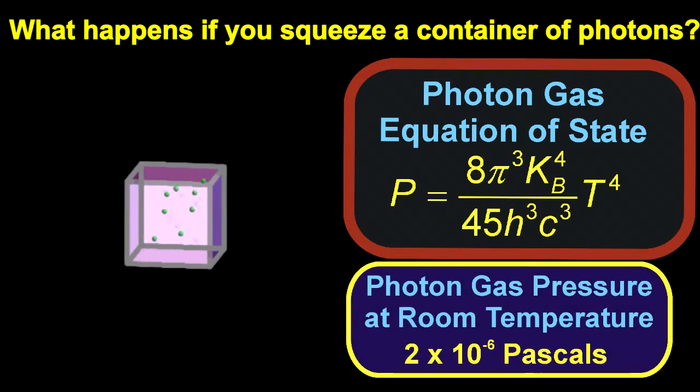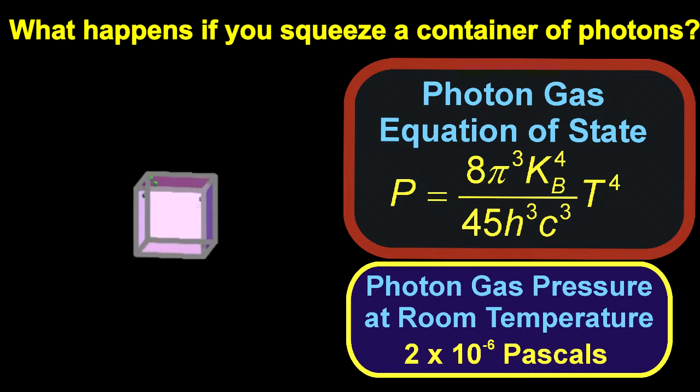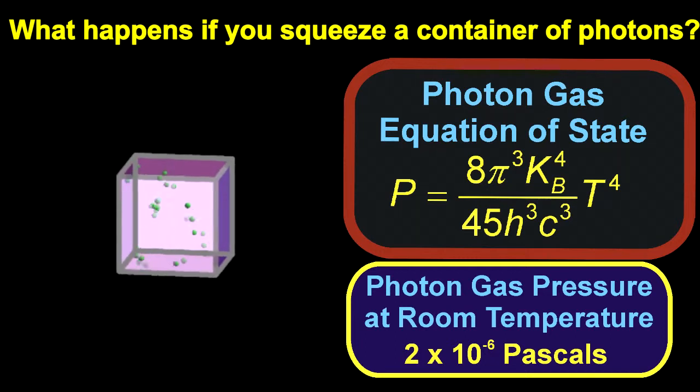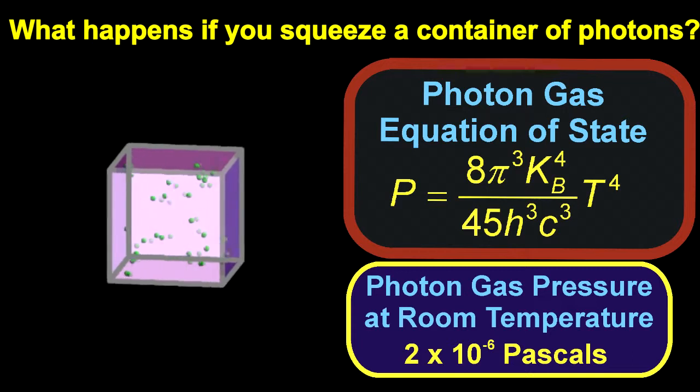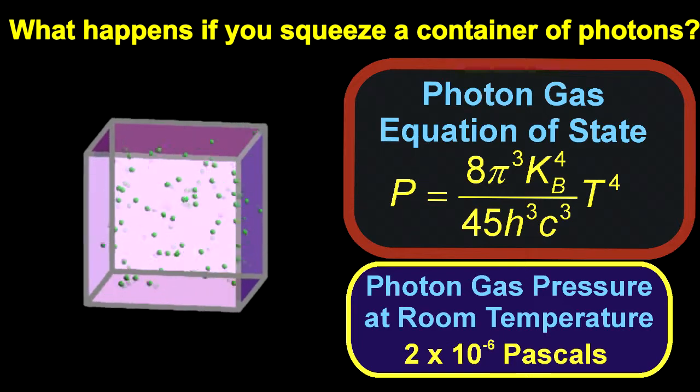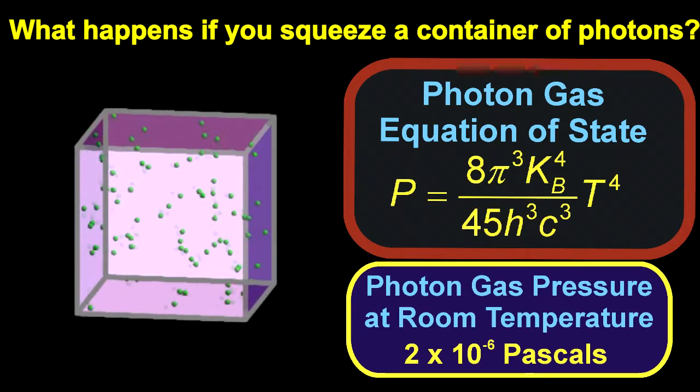The formula allows us to calculate the pressure in a bottle of photons at room temperature. It's about 2 times 10 to the minus 6 pascals, which is less than a trillionth of atmospheric pressure. So it's no wonder that kids don't discover the joy of playing with photon gases.